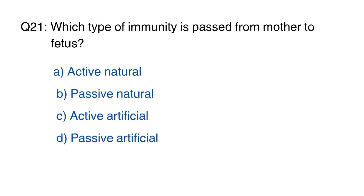Question number 21. Which type of immunity is passed from mother to fetus? The right option is B, passive natural.